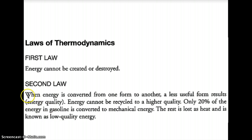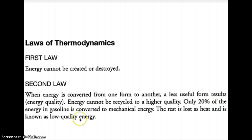The second law of thermodynamics: when energy is converted from one form to another, a less useful form results. Basically, when we use energy, it's really inefficient. For example, when we burn coal to produce electricity, we lose a lot as heat and don't convert it all to electricity. Energy can never be recycled to a higher quality — for example, only about 20% of energy in gasoline is converted to mechanical energy; the other 80% is lost as heat. So energy can't be created or destroyed, and using it is inefficient.